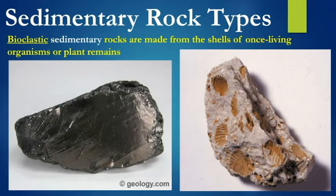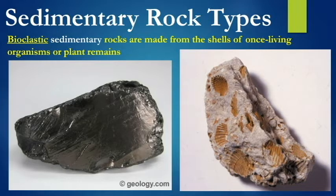Bioclastic rocks — having an understanding of clastic here is really helpful because clastic means fragments and bio means life. So bioclastic rocks are made of bits of once-living organisms, or at least the shells of those once-living organisms. The shells become what's preserved. It could also be plant remains — this black rock on the left here is from ancient forests.